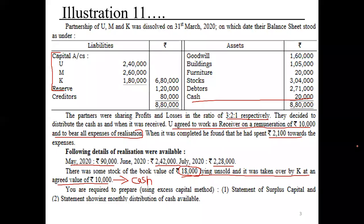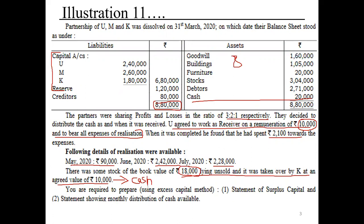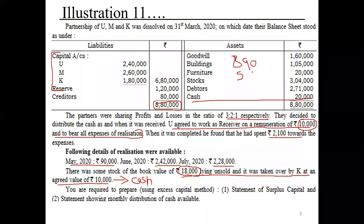We made a total loss of 3,00,000. Let's verify: total liability was 8,80,000 plus 10,000 remuneration paid to U, so total liability was 8,90,000. Total cash available: 90,000 plus 2,42,000 plus 2,28,000 equals 5,60,000, plus opening cash of 20,000 gives 5,90,000. The difference is a loss of 3,00,000, confirming our answer.